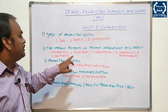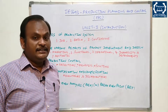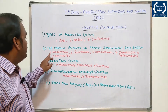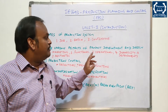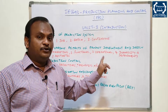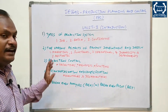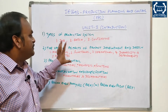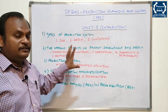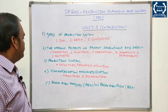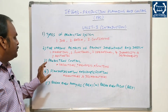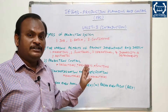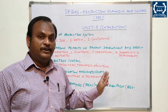Second question: The various aspects of product development and design - marketing, functional, operational, durability, dependability, and aesthetic. These are the major question types. Third question: Production control - that is, objectives, benefits, and functions.